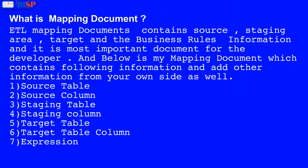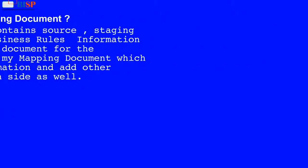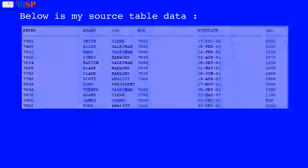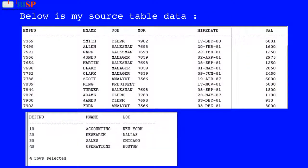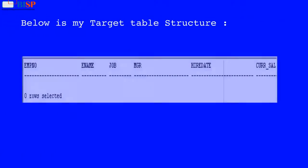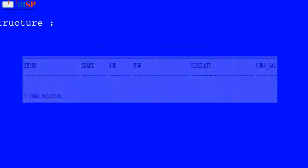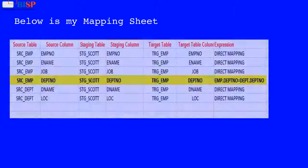The mapping document includes: 1. Source Table, 2. Source Column, 3. Staging Table, 4. Staging Column, 5. Target Table, 6. Target Table Column, 7. Expression. Below is my source table data, below is my target table structure, and below is my mapping sheet.